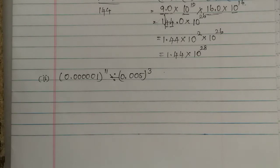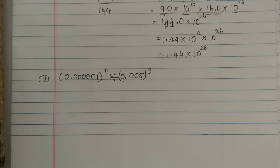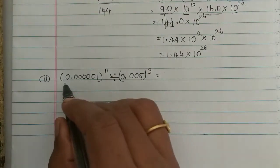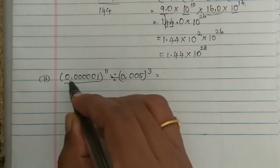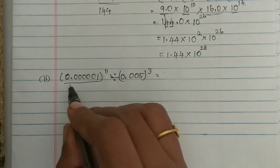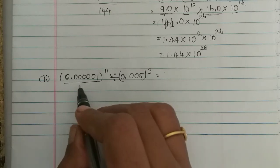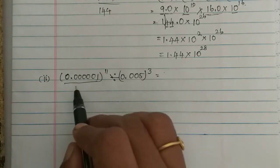In the second subdivision: 0.0000001 to the power 11, divided by 0.005 to the cube. So now we convert each number. The point is 0 — this is a decimal number smaller than 1.